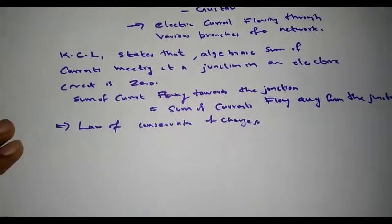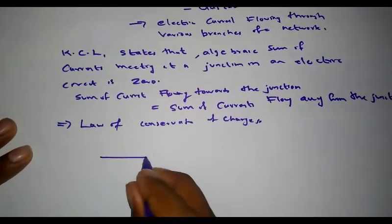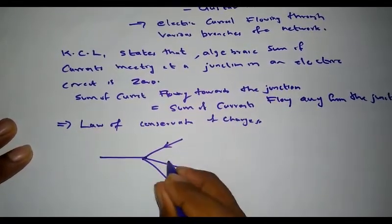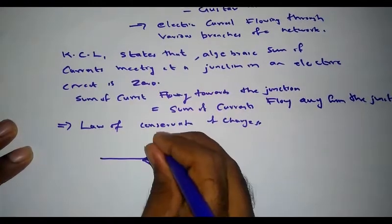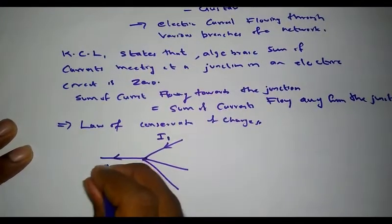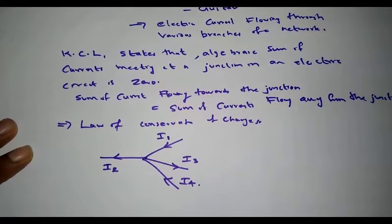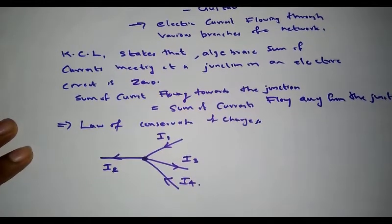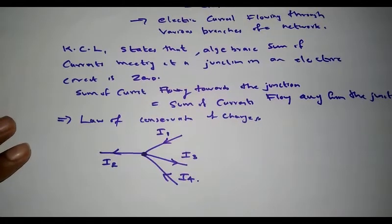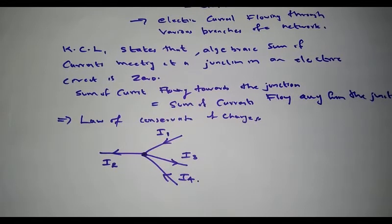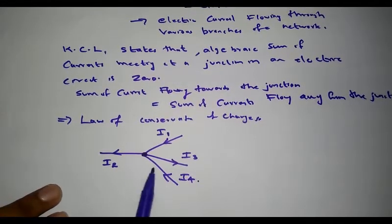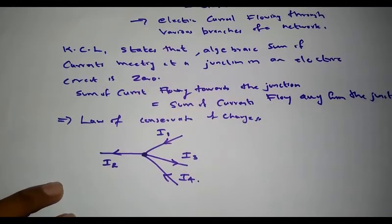For an example, let us consider a simple electrical junction as shown. Let us consider three branches meeting at a common point. One incoming current is I1, outgoing current is I2, another outgoing current is I3, and another incoming current is I4. This is an electrical junction where four branches of an electric circuit are meeting. Considering the directions of currents as shown, the current entering into the junction is taken as positive and the current leaving the junction is taken as negative.